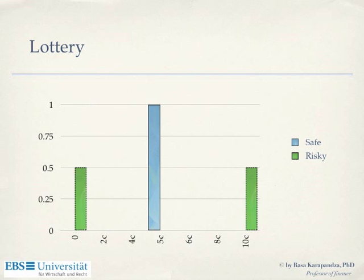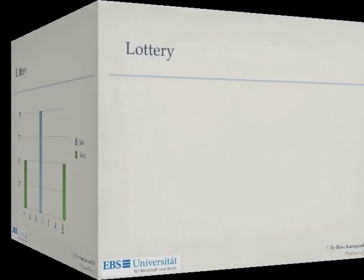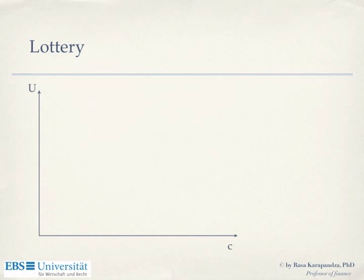We said this is well captured by a utility function which is concave. If people have a concave utility function, then they will prefer 5 cookies for sure compared to 10 cookies with probability one-half and 0 with probability one-half. For this class, let's assume that the utility function is the square root of C. This is a concave function.